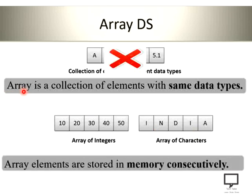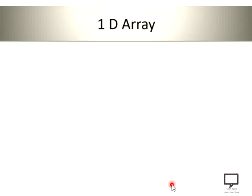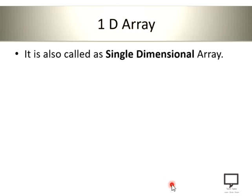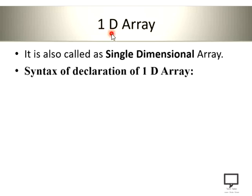Now let's see what a 1D array is. This 1D array is also called a single dimensional array. The '1' represents single and 'D' represents dimension. So 1D is nothing but a single dimensional array.